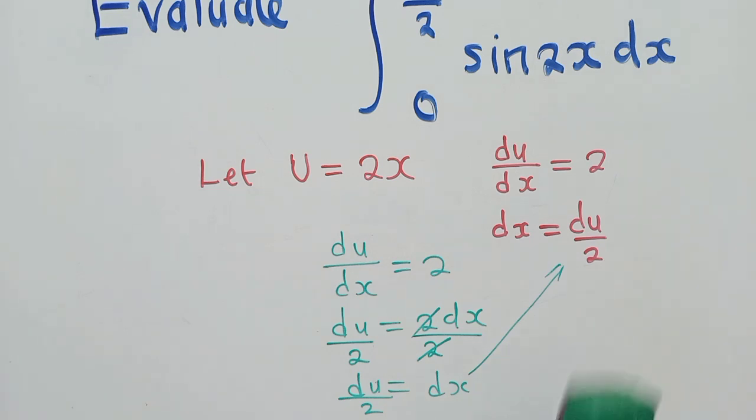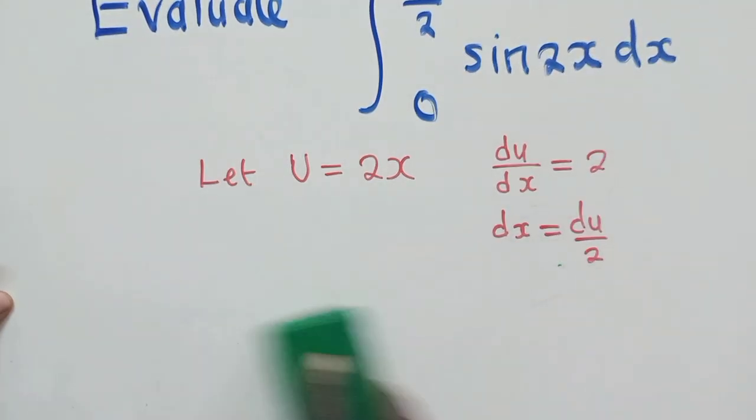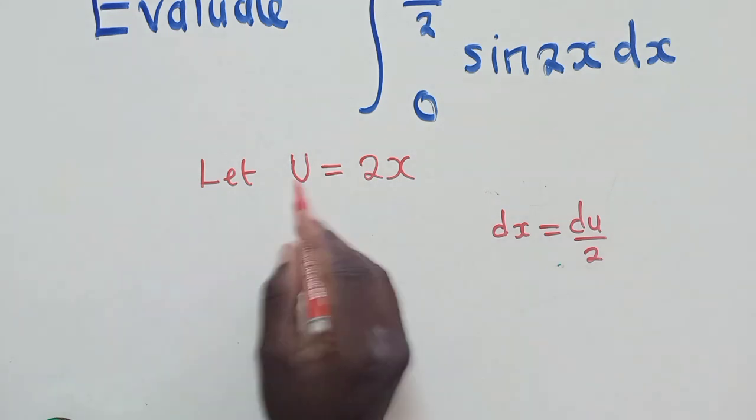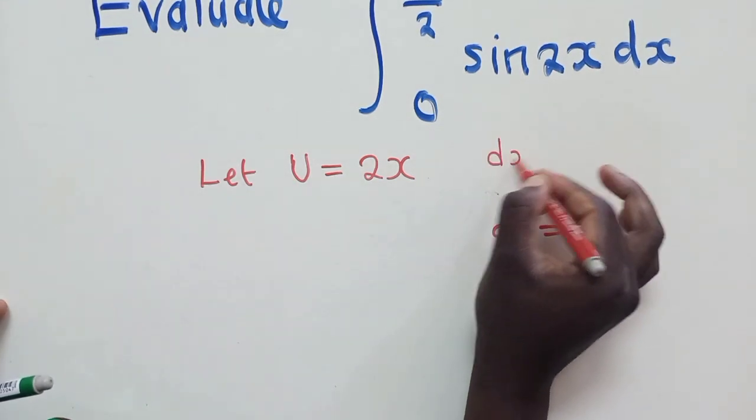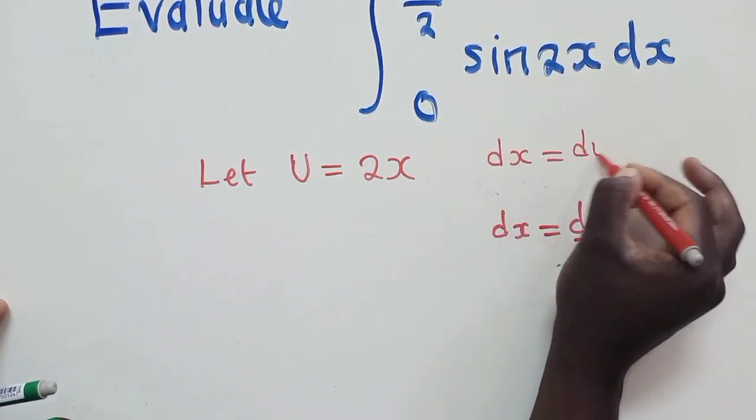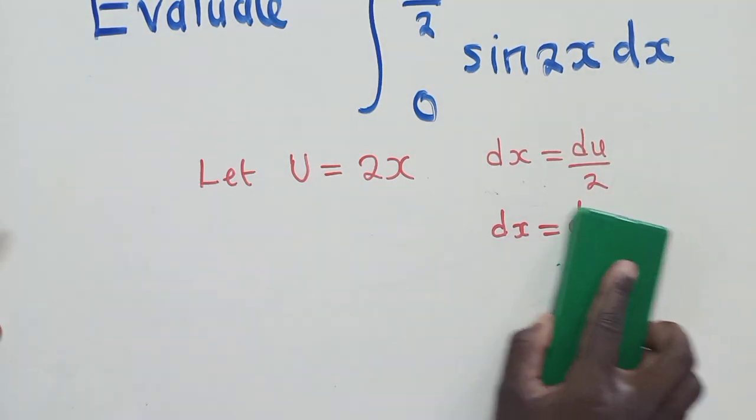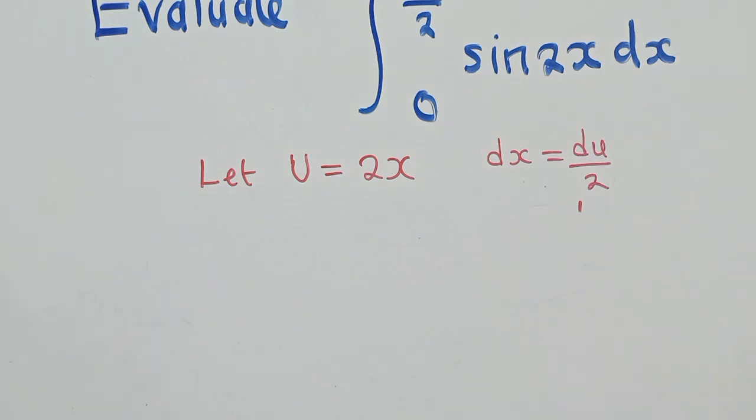So after doing that, all the most important things that we need to remain with are u and dx, which is equal to du over 2. So now that we have these two, we are good to go.